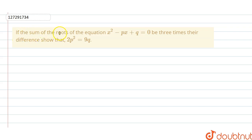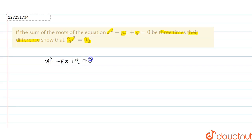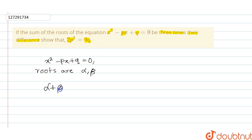Welcome guys. If the sum of the roots of the equation x squared minus px plus q equals zero is 3 times their difference, show that 2p squared equals 9q.